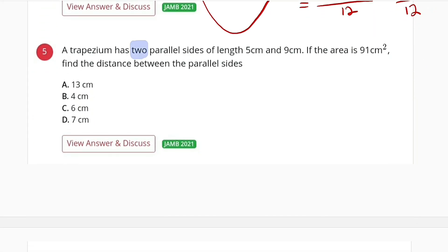A trapezium has two parallel sides of length 5 centimeters and 9 centimeters respectively. If the area is 91 centimeters squared, we are asked to find the distance between the parallel lines or the parallel sides. We are talking about the height.